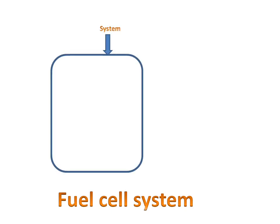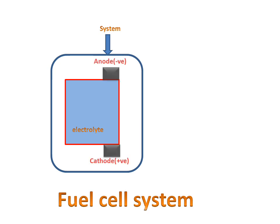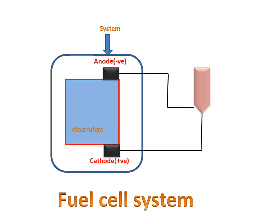We have a system in which we have an electrolyte cell with two electrodes, anode (negative) and cathode (positive). And we have a light bulb which is connected to the electrodes, anode and cathode.